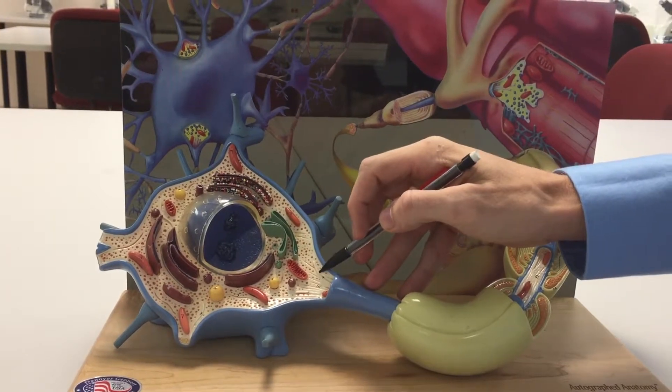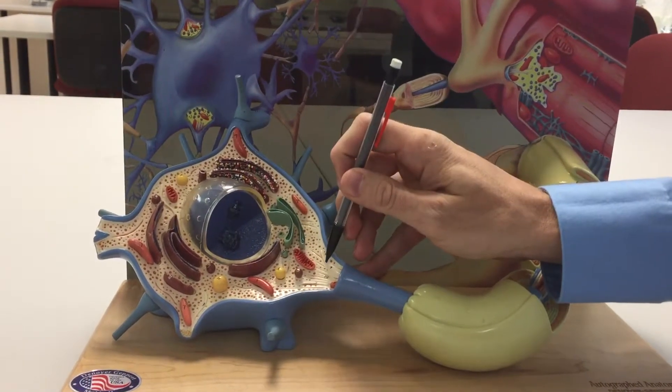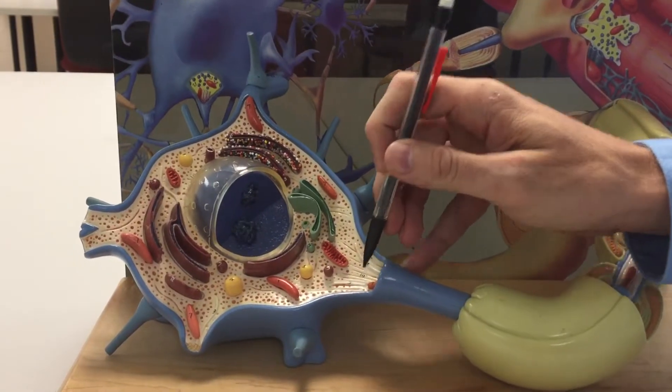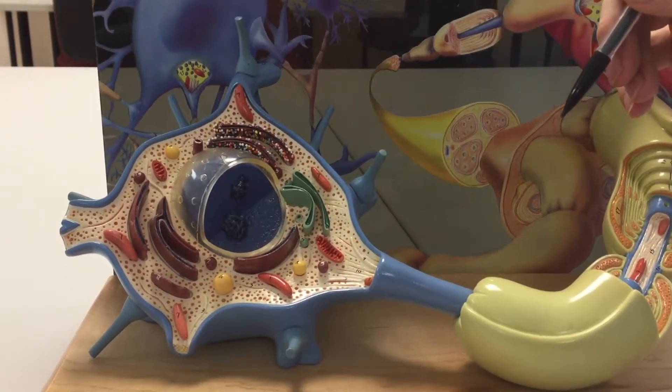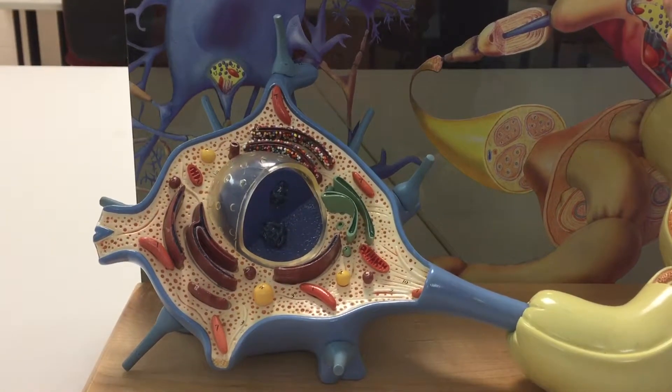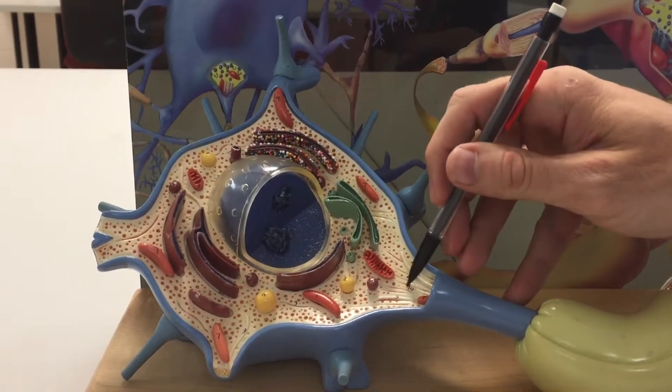These fiber-like structures here, there's one there, there's one there, there's a third one. Those fibers which provide structural integrity to the neuron are called neurofibrils.